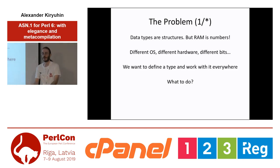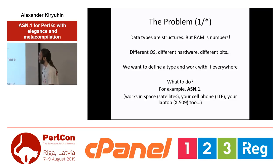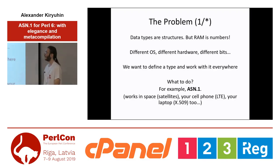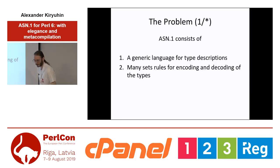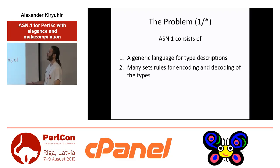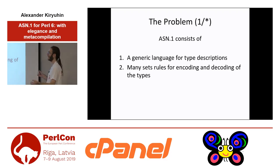We want to define some code, write it, and then run it everywhere, hopefully. And one of the solutions proposed in 1984 is called ASN.1. It is used in a lot of different fields — in space, in your cell phone likely, in your laptop. And it works so well that you don't even need to think about it. ASN.1 consists of actually two parts.